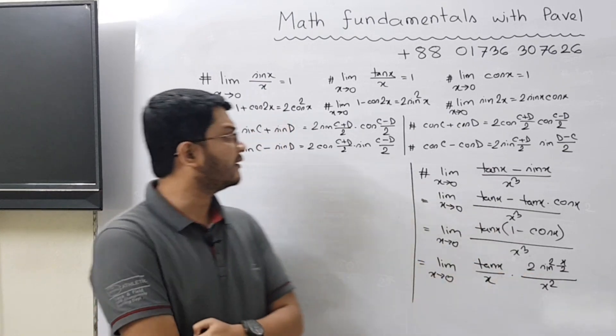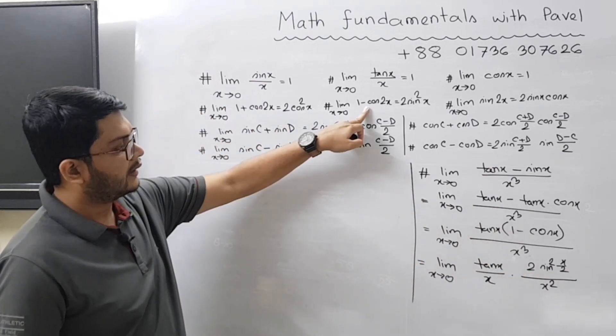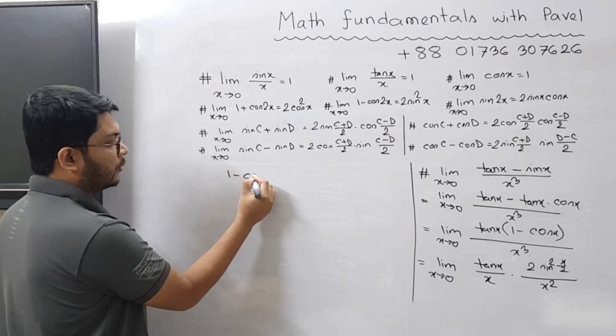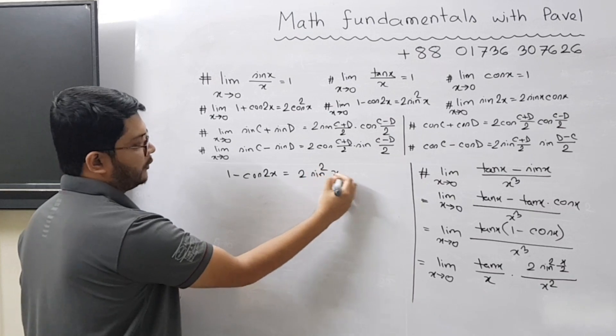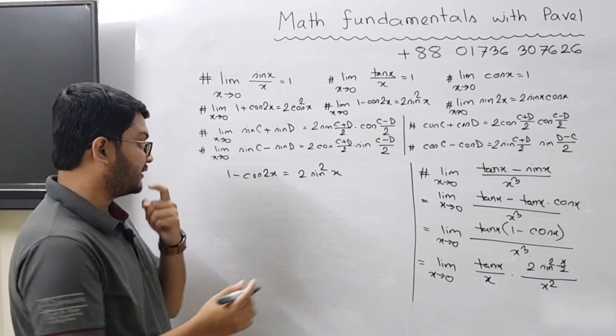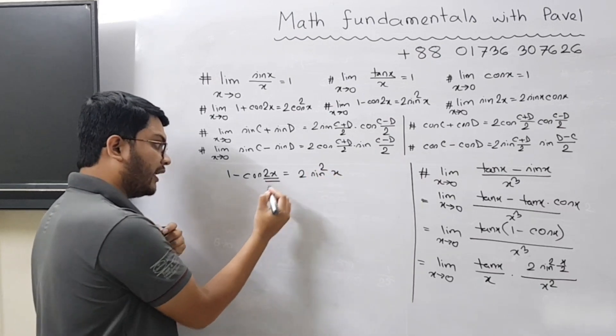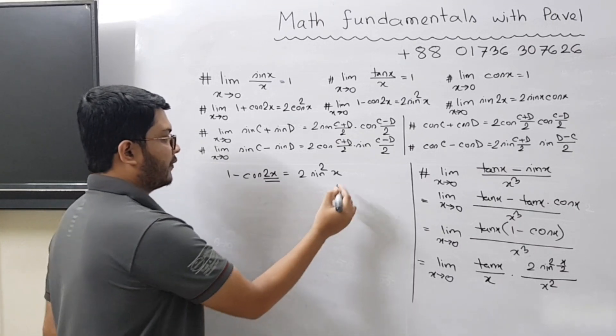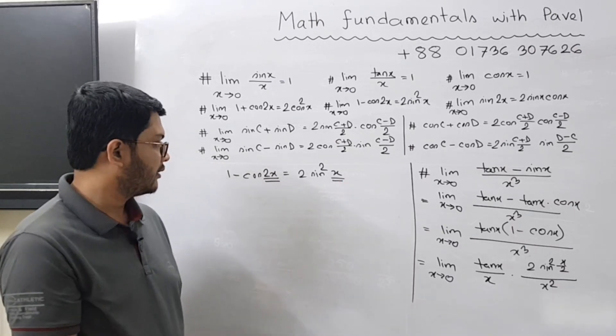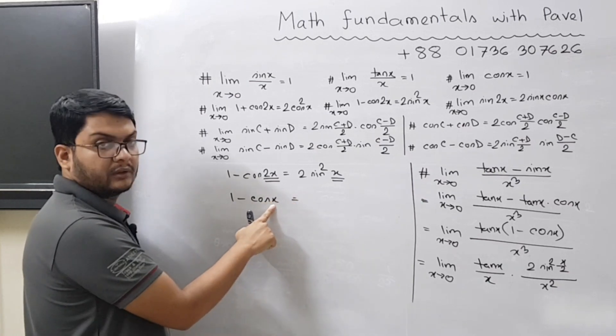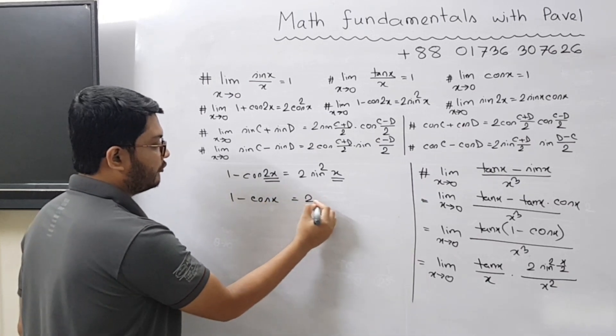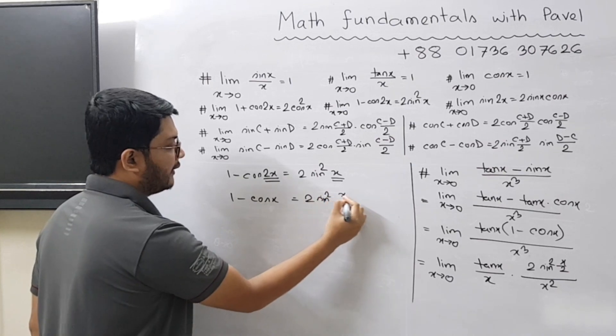Why does it happen? As you can see, the formula says 1 minus cos 2x equals 2 sin² x. So what happens is the theta becomes half here. If you have 1 minus cos x, on the right-hand side we will get 2 sin² (x/2). So the theta becomes half—that's the easiest way to remember it.